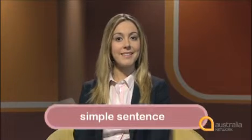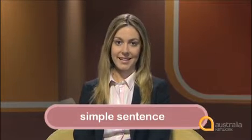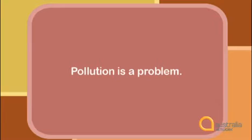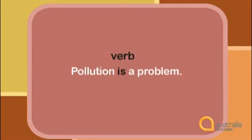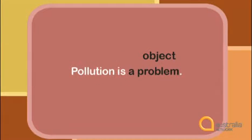What is the range of sentence types? There is a simple sentence, like this: Pollution is a problem. This example shows you the basic structure: a subject, pollution, a verb, is, and the object, a problem.